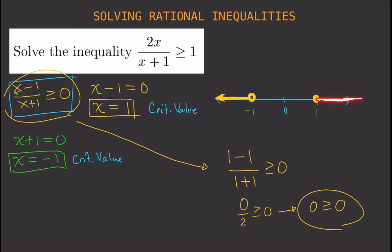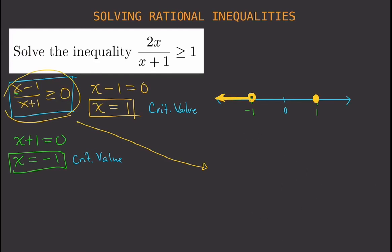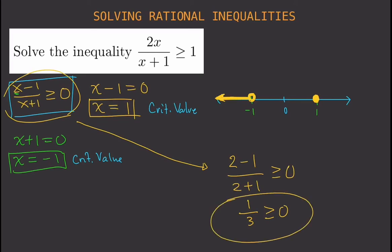Finally, let's test the interval from 1 to positive infinity. Pick a value from that interval — I'll use x equals 2. Substituting gives 2 minus 1 over 2 plus 1, which is 1 over 3 greater than or equal to 0. That is true — 1 third is greater than 0 — so this interval is also a solution.